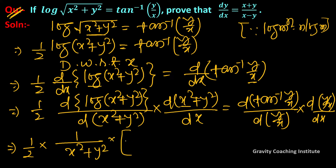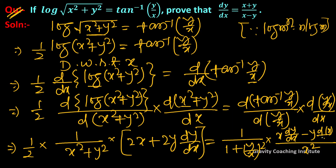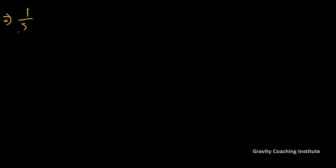और इसमें x square को differentiation करेंगे तो यह होगा 2x, और y square को करेंगे तो 2y dy upon dx. और tan inverse का formula होगा 1 upon 1 plus (y upon x) whole square, multiply करेंगे और quotient rule लगाएंगे तो यह होगा x into dy upon dx minus y into dx upon dx. और 2 common लेंगे तो यह होगा 1 upon 2 into 1 upon x square plus y square.